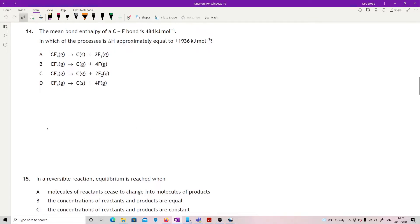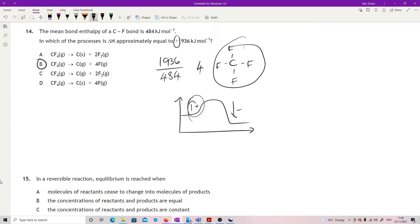Question 14: The mean bond enthalpy of a carbon to fluorine bond is 484 kJ per mole. In which of the processes is delta H approximately equal to plus 1936? Let's divide 1936 by 484, and what that tells me is that I'm looking at four bonds, four carbon to fluorine bonds. And then I need to find something—remember this is plus, so just a normal reaction pathway, you break and then you make, so you go plus and then minus. My break is the plus, so if I'm looking for this I need to break four carbon to fluorine bonds. Let's have a look, let's find something where I'm doing that. So the only thing that fits nicely is B.